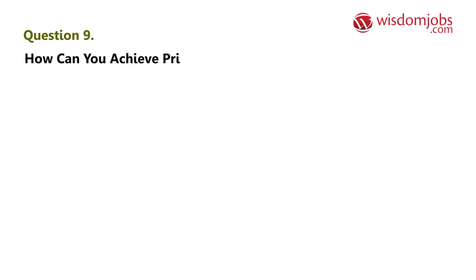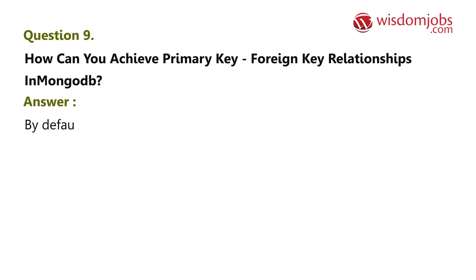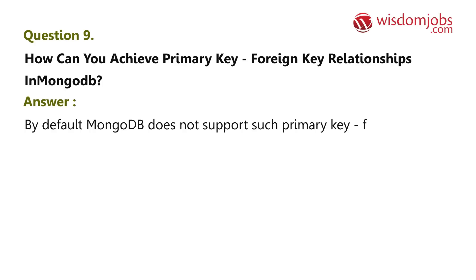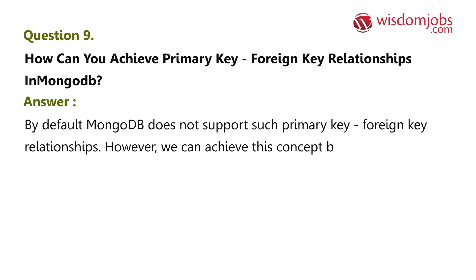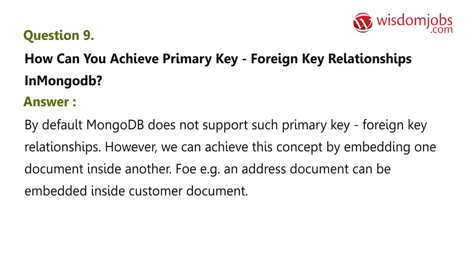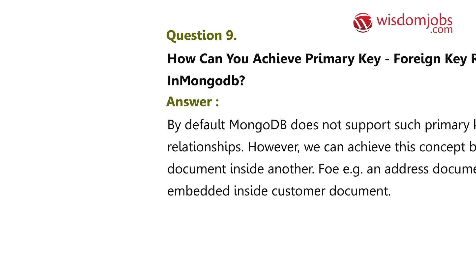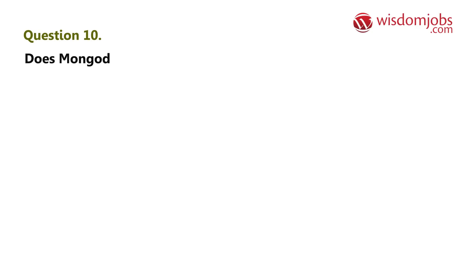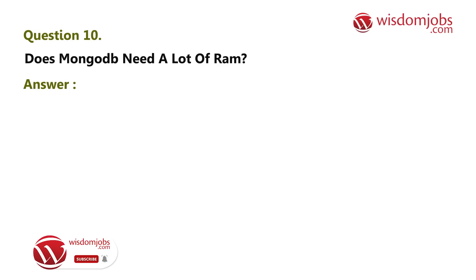Question 9: How can you achieve primary key-foreign key relationships in MongoDB? Answer: By default, MongoDB does not support such primary key-foreign key relationships. However, we can achieve this concept by embedding one document inside another. For example, an address document can be embedded inside a customer document.